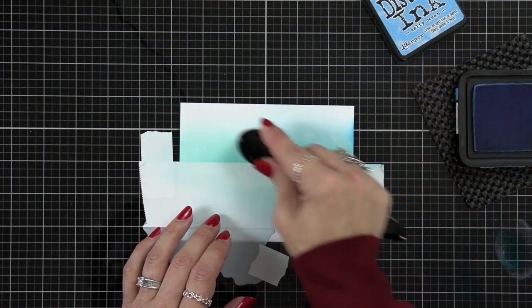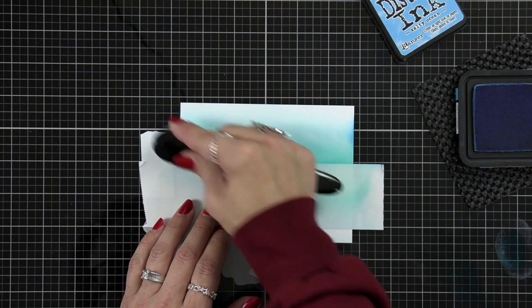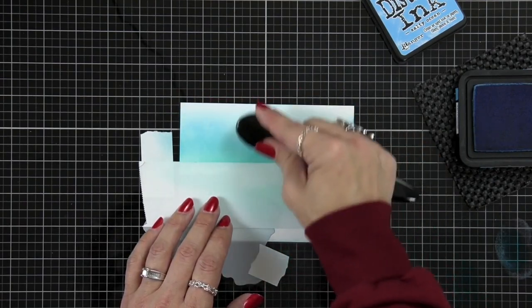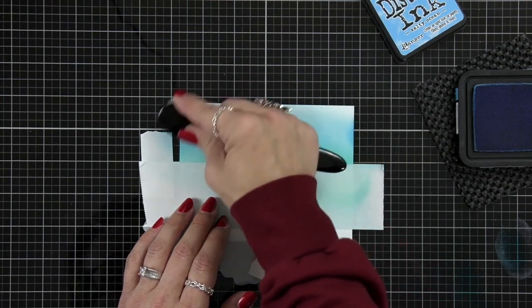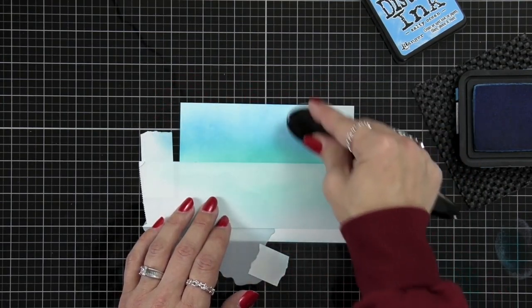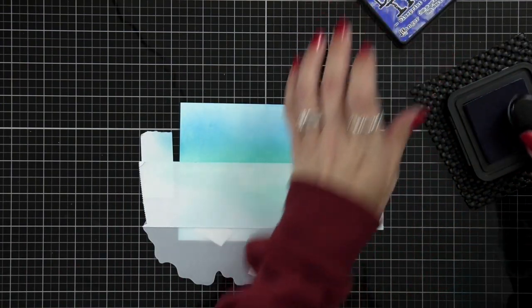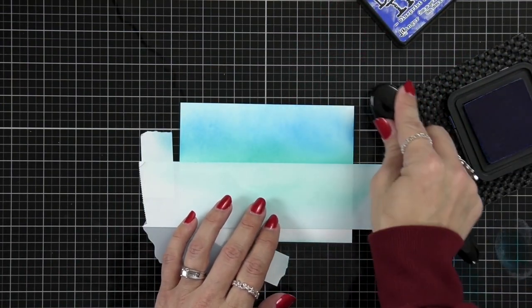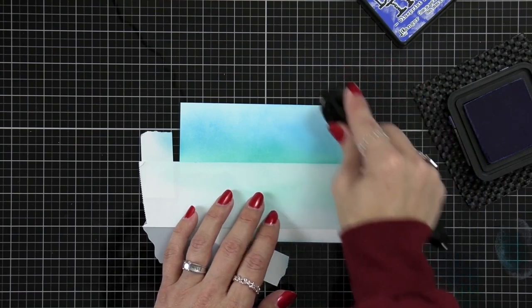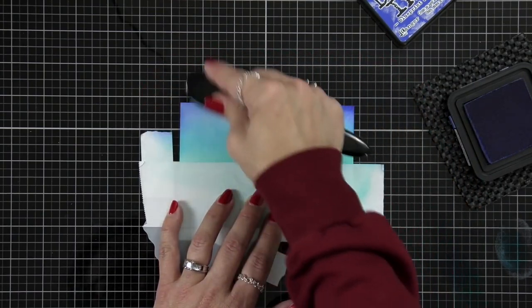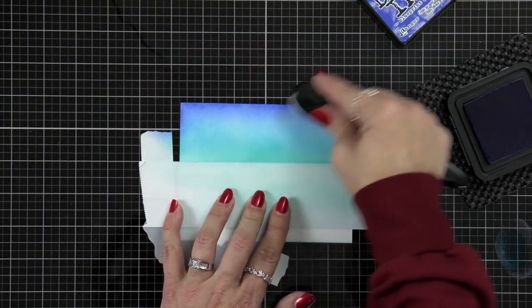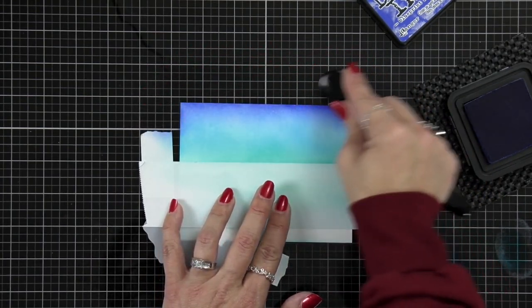Now I really have been enjoying using my distress inks more with a blending brush. I find that I have a lot more control. I'm not getting so many marks on my cardstock like I did before. So I started with just a quick line of salvaged patina. I added in some salty ocean and then I'm going to come in from the top using blueprint sketch. Now I am using the same blending brush for all of these colors. If I need to switch in between I just wipe it off on a paper towel.